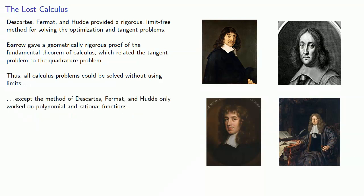Except the method of Descartes, Fermat, and Huda only worked on polynomial and rational functions. And here's where our story gets complicated. It's complicated because it involves difficult and incomprehensible objects, human beings, instead of easy-to-understand ideas like calculus.